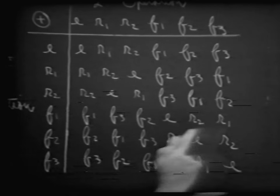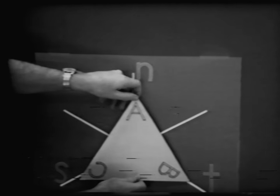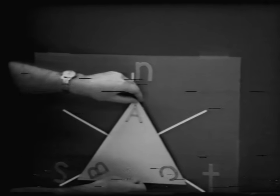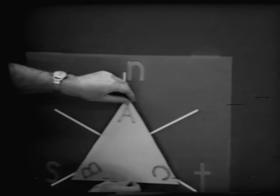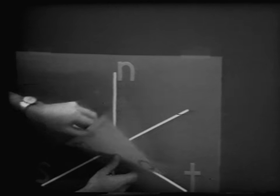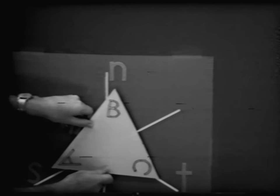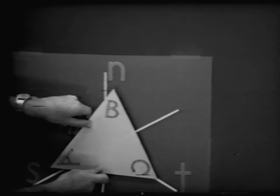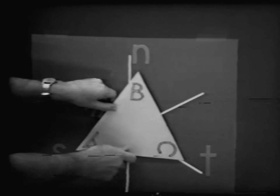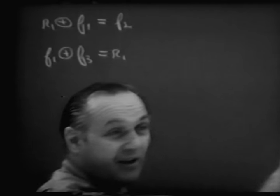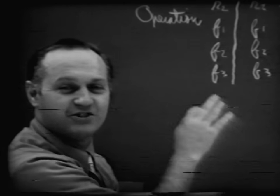Let's check F sub 1 followed by F sub 3. Going to our starting position: F sub 1 is a flip about the N line, and then F sub 3 is a flip about the line T. We end up in a particular position. Looking at that in relation to the starting position — R sub 1. That then is equal to R sub 1. And sure enough, our table is certainly accurate in that instance.